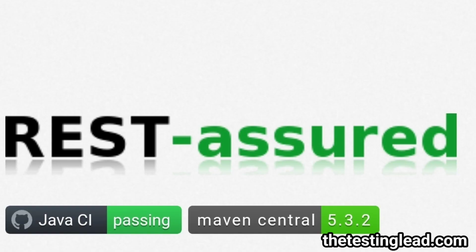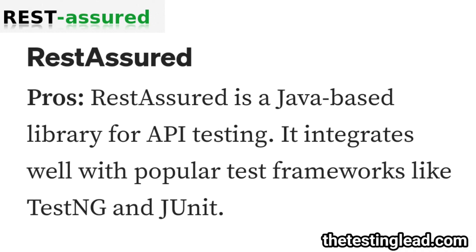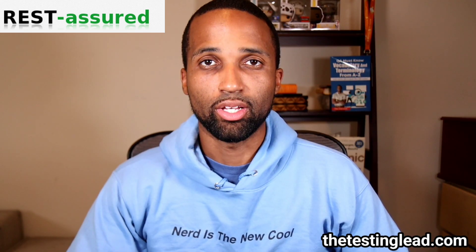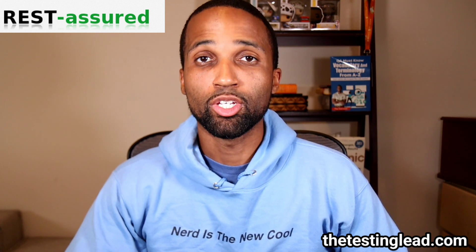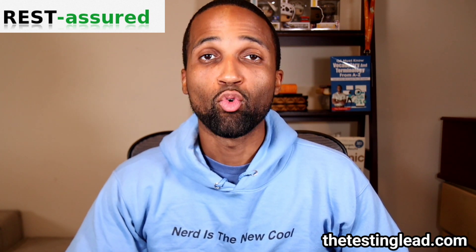Next, we have Rest Assured. This is mainly Java-based — for C-Sharp, we have RestSharp — but for right now, let's focus on Rest Assured. The pros: Rest Assured is a Java-based library for API testing that integrates well with popular testing frameworks like TestNG and JUnit. The cons: it is limited to just Java projects because it's built directly into your code for your testing.